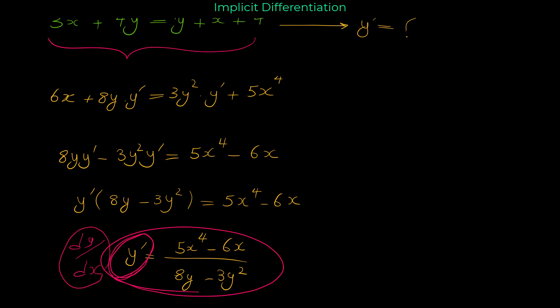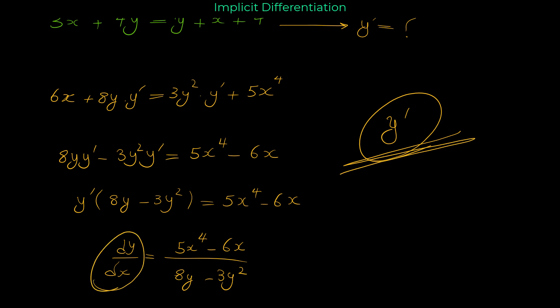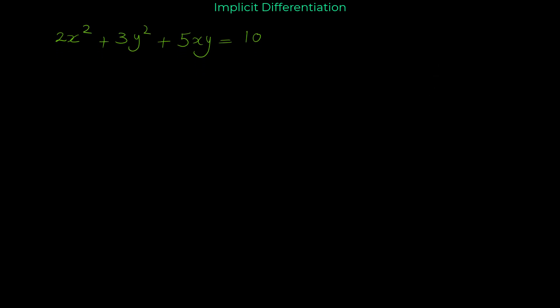Instead of y prime, you can write dy/dx. The reason we often write y prime is that it's a shorter notation for the derivative of the function y with respect to x. But dy/dx is a better notation to use. I recommend using dy/dx because in this notation you know that y is the function and x in the denominator is the variable. With y prime alone, you don't know what the variable is, but dy/dx makes everything clear.